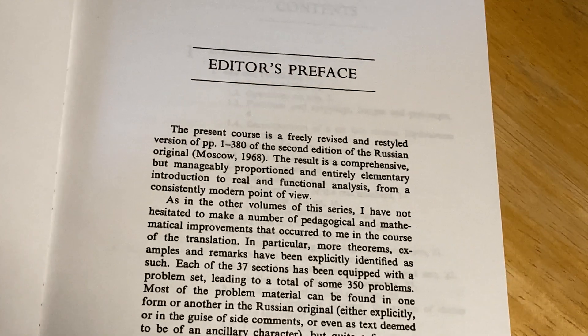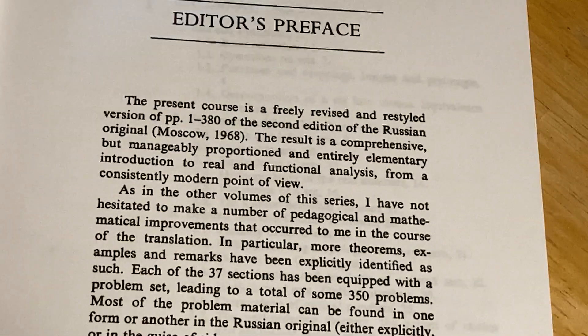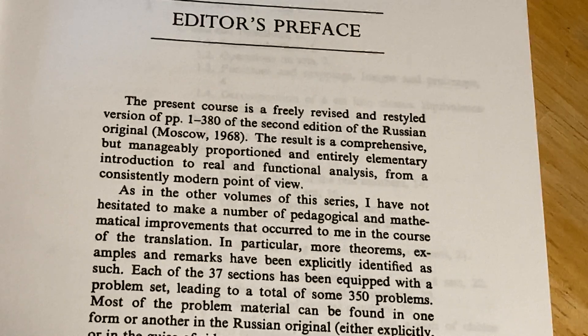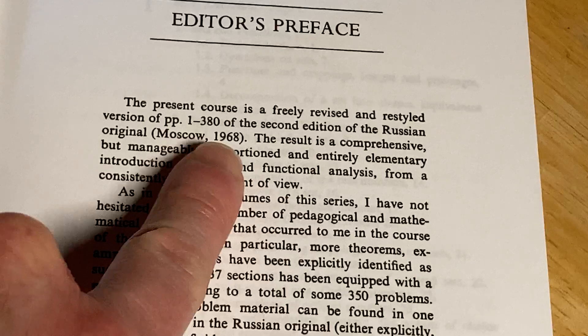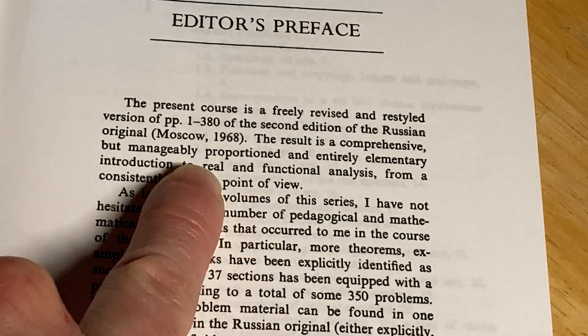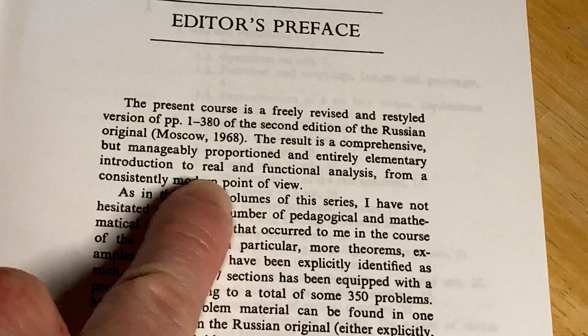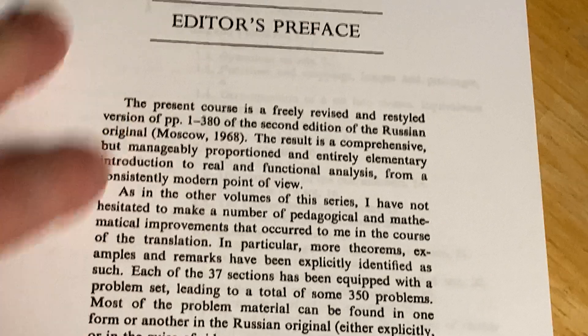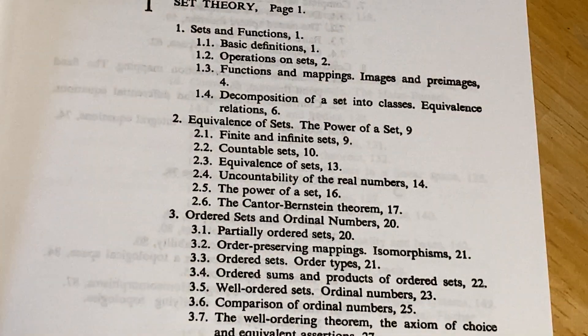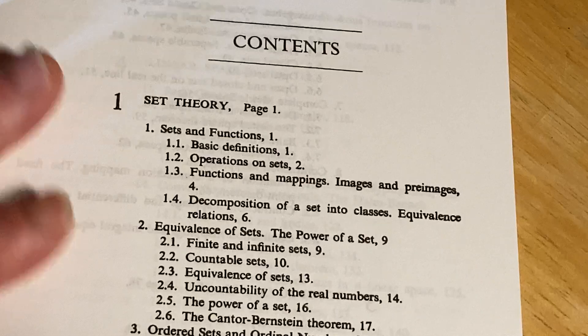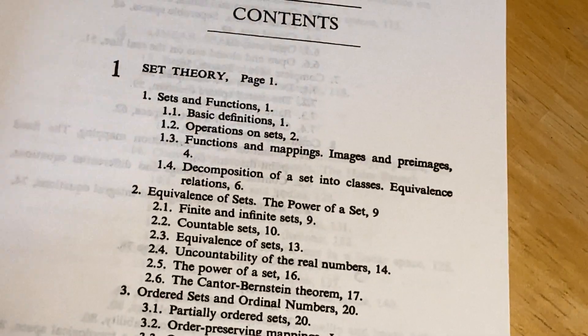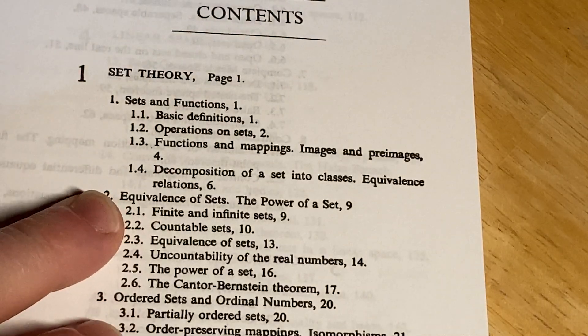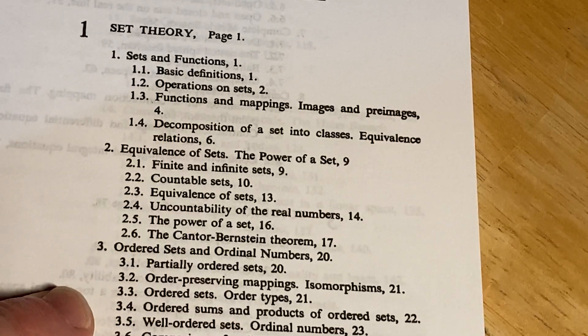Let's look here at the editor's preface to see what this says. The present course is a freely revised and restyled version of pages 1 to 380 of the second edition of the Russian original Moscow 68. The result is a comprehensive but manageably proportioned and entirely elementary introduction to real and functional analysis from a consistently modern point of view. So this was originally written in Russian. And here are the contents. Let's take a look at this. So it starts with set theory, which makes sense. A lot of these books start with set theory. Equivalence of sets, the power of a set.